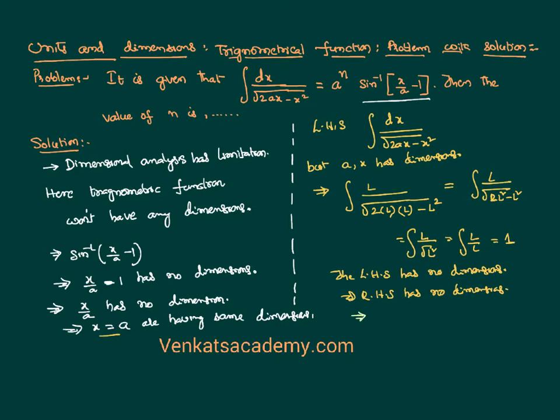That means, RHS we have already proved sin inverse of something is not having any dimension. A power N also has no dimensions. A power N has no dimensions. That is possible only when value of N is equal to 0.